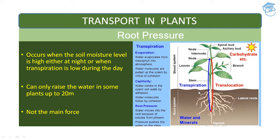Transpiration creates the transpiration pull for absorption and transport in plants. It supplies water for photosynthesis, transports minerals from the soil to all parts of the plant body, cools leaf surfaces sometimes 10 to 15 degrees by evaporative cooling, and maintains the shape and structure of the plant by keeping cells turgid. Transpiration is an evaporative loss of water by plants, occurring mainly through stomata in the leaf. Besides water vapor loss, exchange of oxygen and carbon dioxide also occurs through stomata.